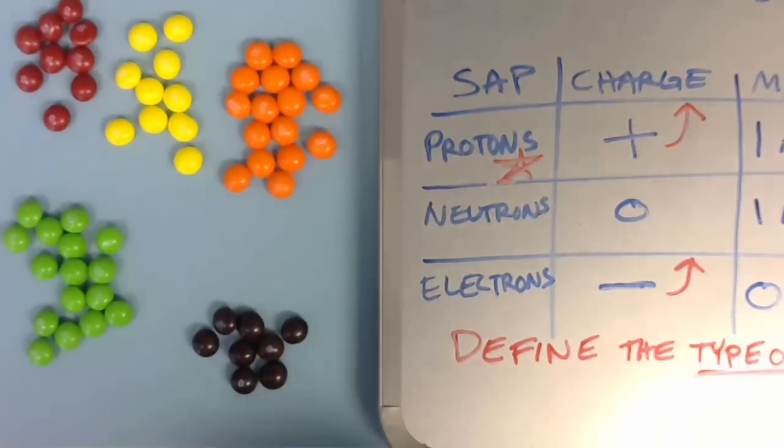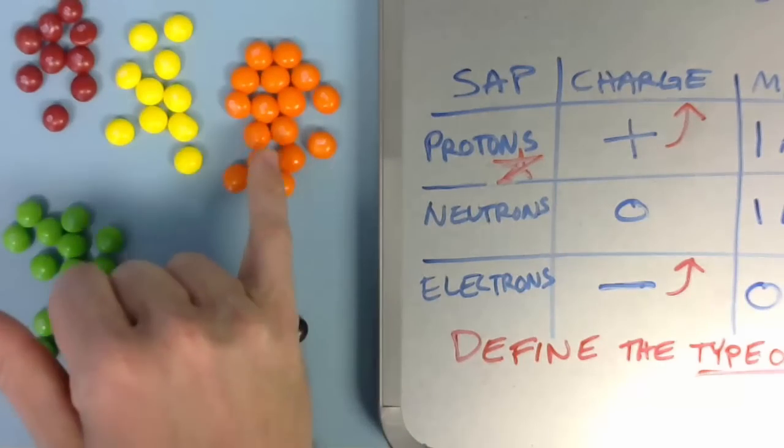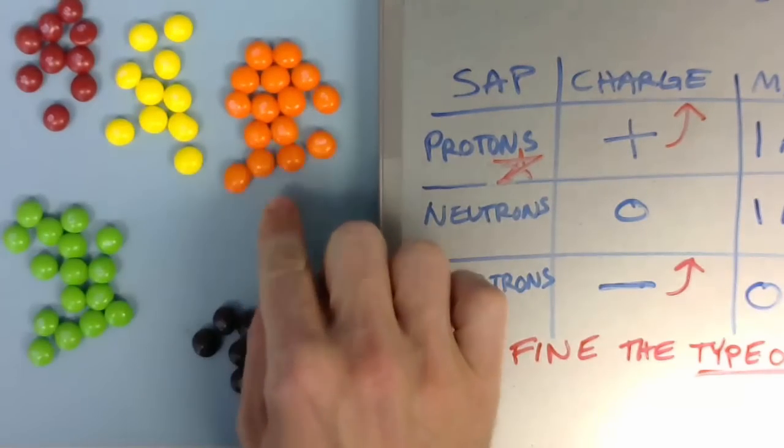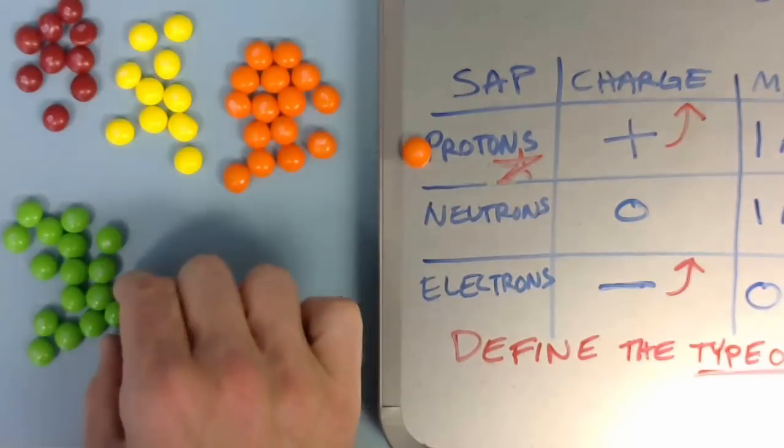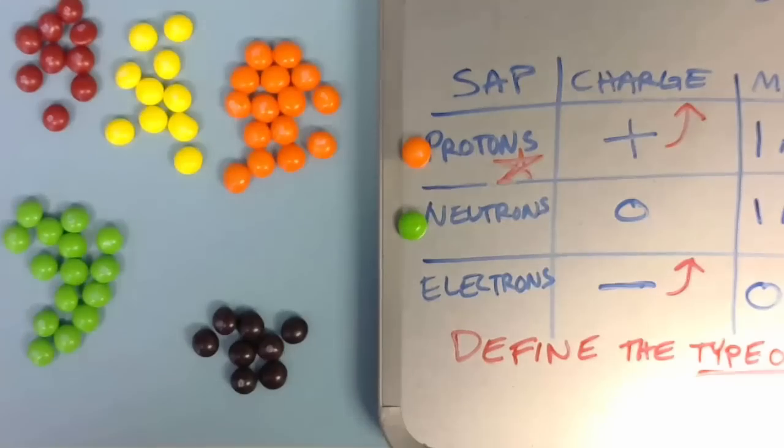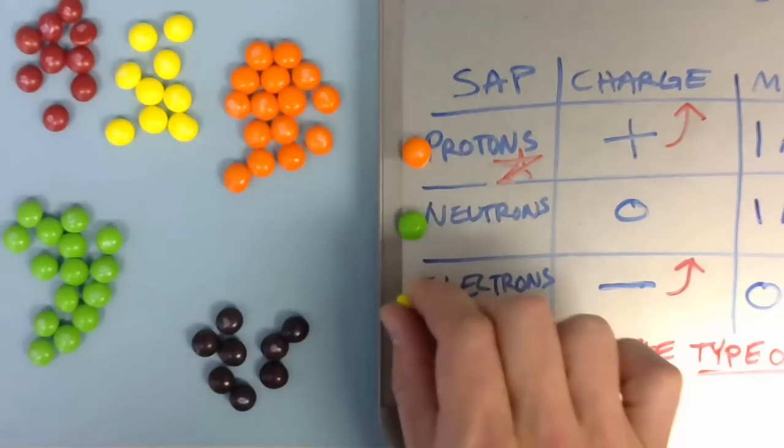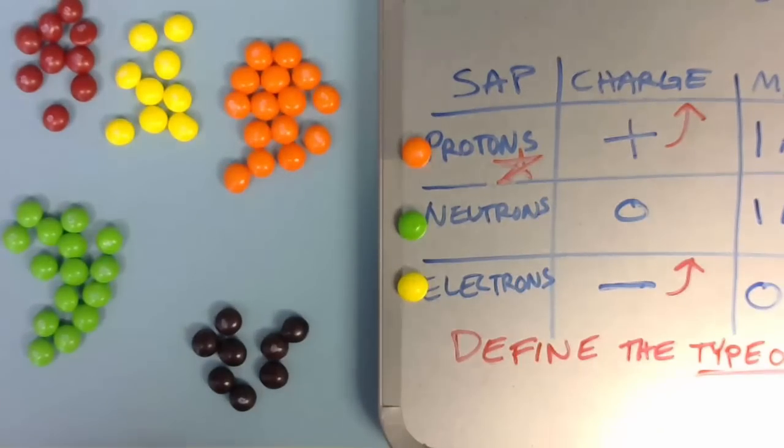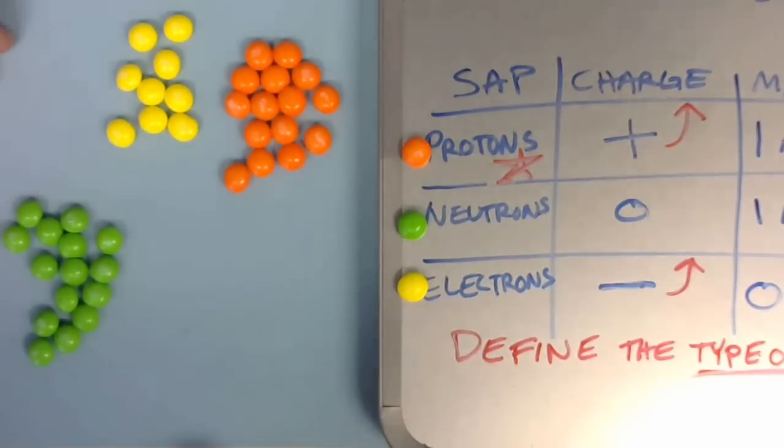What I would do is really quickly sort them by color. Now, designate each of these subatomic particles to be coordinated with one of these candies. I'm going to have the orange ones as protons, green ones as neutrons, and yellow ones as electrons. Because those are the three most abundant I have. Go ahead and eat the other two, or save them for later.